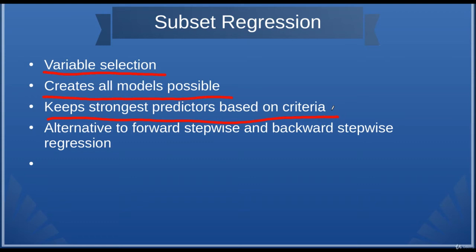Now, Best Subset Regression is an alternative to Forward Stepwise and Backward Stepwise Regression. With Forward Stepwise Regression, you add a variable to the model each time, and it'll select the best variable to add based on what improves the R-squared the most — especially if you use SPSS. Backward Stepwise Regression is where you remove a variable one step at a time, making multiple models and removing until you're satisfied based on your criteria.